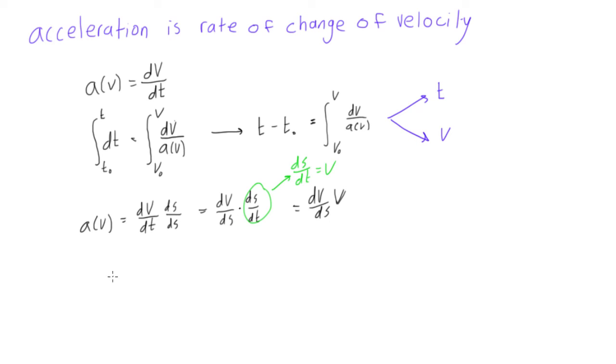Now what we're going to do is, we'll come down here and write this a little cleaner so we're not getting confused. So a(v) is equal to dv/ds times v. And now what we want to do is, we just want to switch these variables around a little bit.